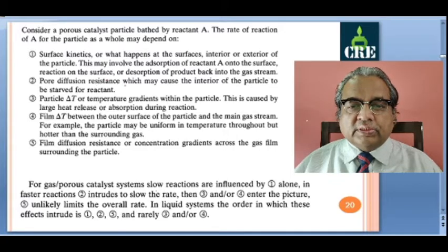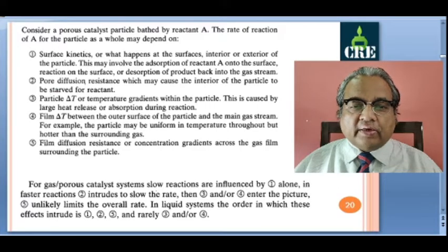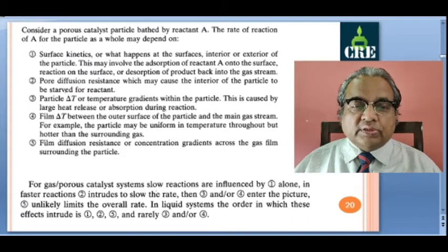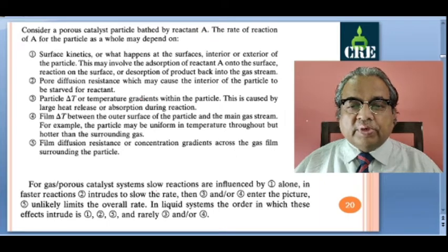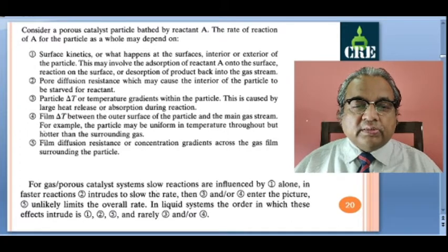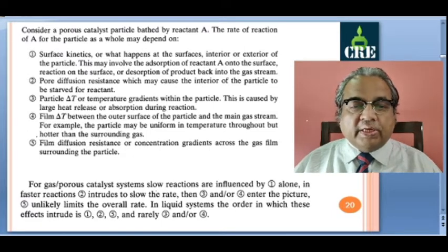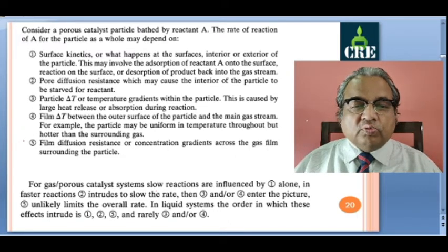Pore diffusion resistance may cause the interior of the particle to be starved of reactant. This resists and does not allow the reactant to reach the interior surface within the pore. Then particle delta T refers to temperature gradients within the particles, caused by heat release. Film delta T occurs between the outer surface of the particle and the main gas stream - the particle may be uniform in temperature throughout but hotter than the surrounding gas.